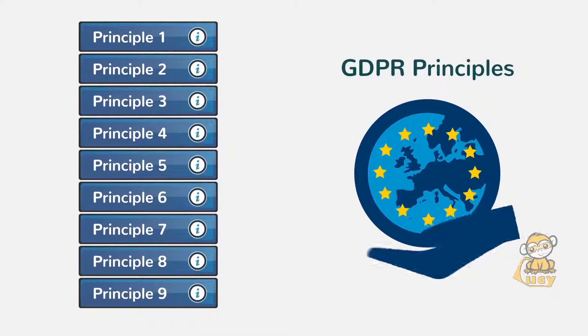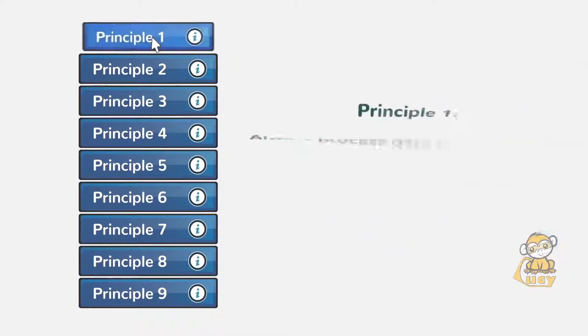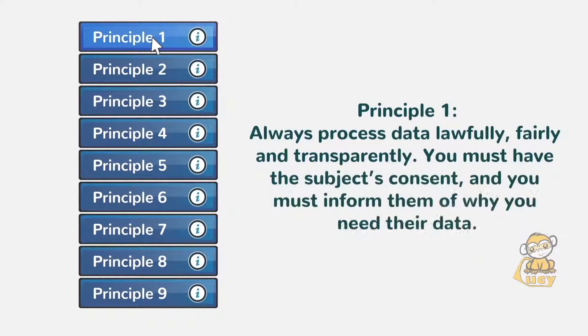So, what are the principles that guide GDPR? Principle 1. Always process data lawfully, fairly, and transparently. You must have the subject's consent, and you must inform them of why you need their data.